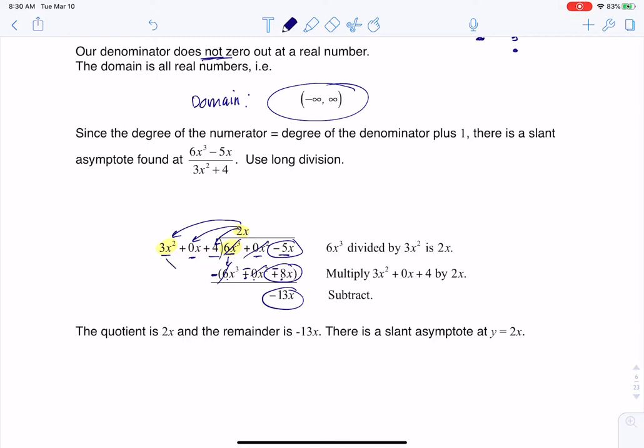You can't multiply 3x squared to get to negative 13x unless you're going to multiply by a fraction, which is not what we want. So when we're done here, our quotient is 2x and our remainder is negative 13x. We don't even need the remainder.